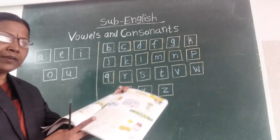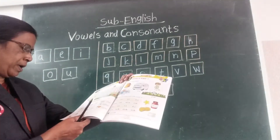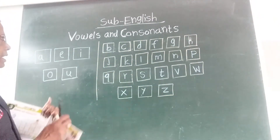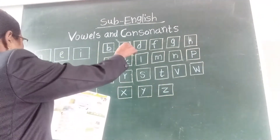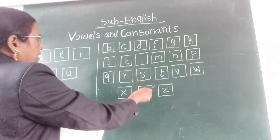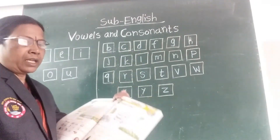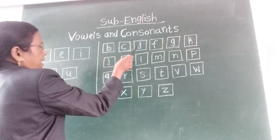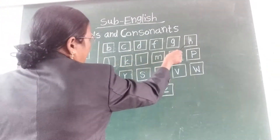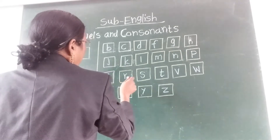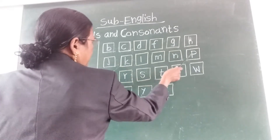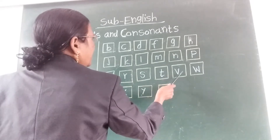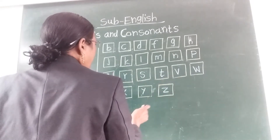So students, take your books and open page number twenty-two. You have to learn vowels — the consonants include letters like X, T, P, W, X, Y and Z.